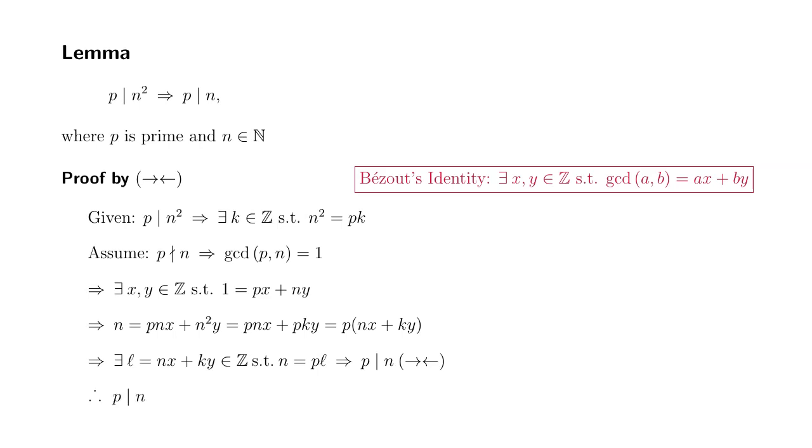You might feel a little bit strange here because we just got p divides n, which was the contradiction, but because of the contradiction, this assumption was wrong, which means that actually p does divide n. All right? That's it. I hope that this was clear.